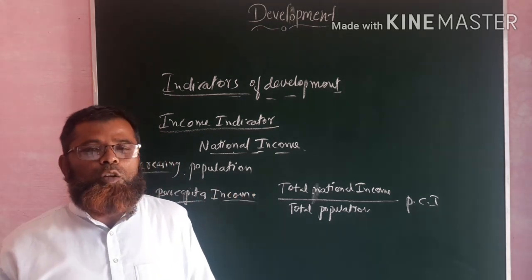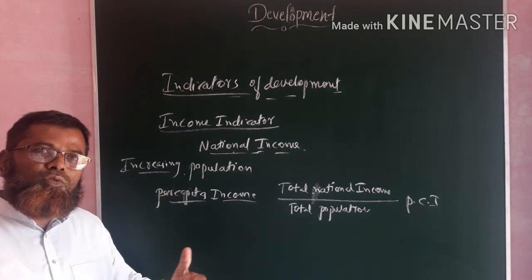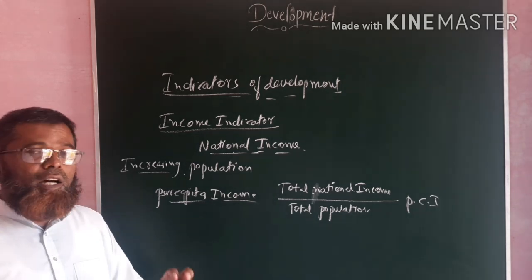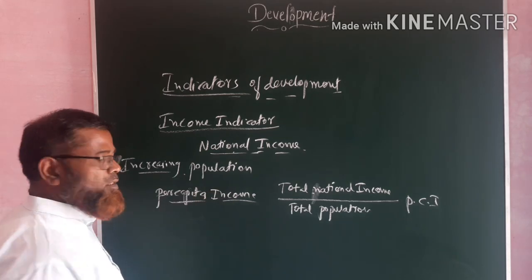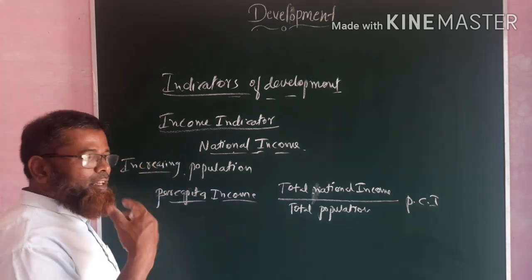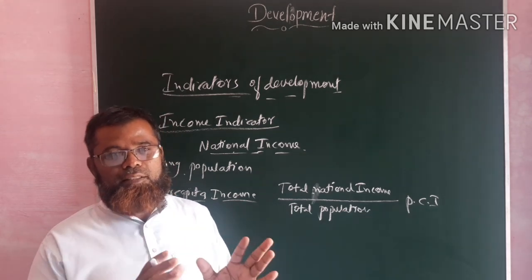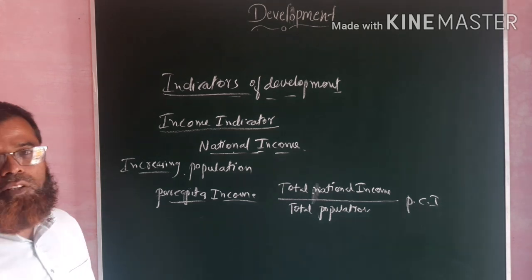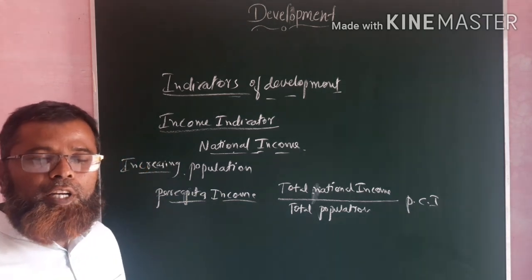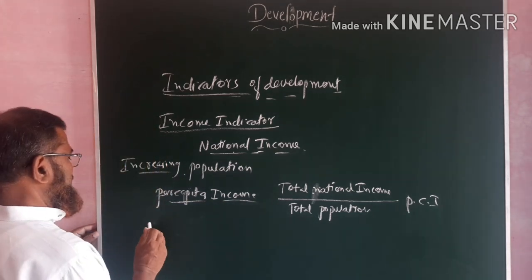However, per capita income is also not a good criteria to measure development, because here the concentration of wealth is in few hands. In reality, many people are having very less income. Rising income in per capita terms doesn't mean that all people are getting all types of facilities. That's why we need other parameters to measure development.